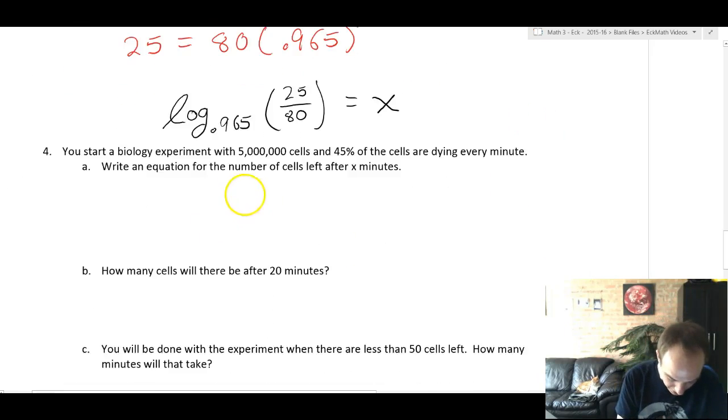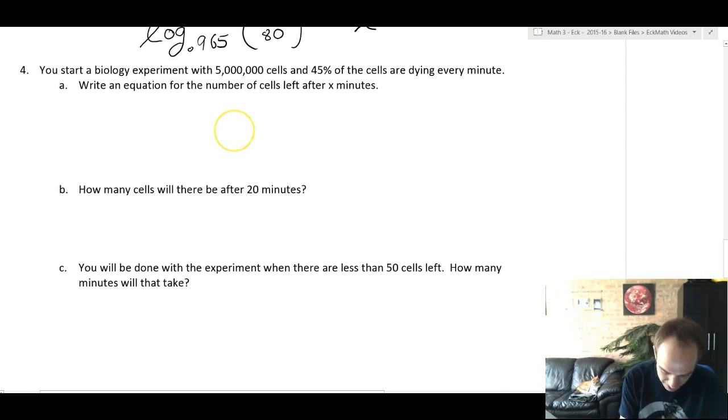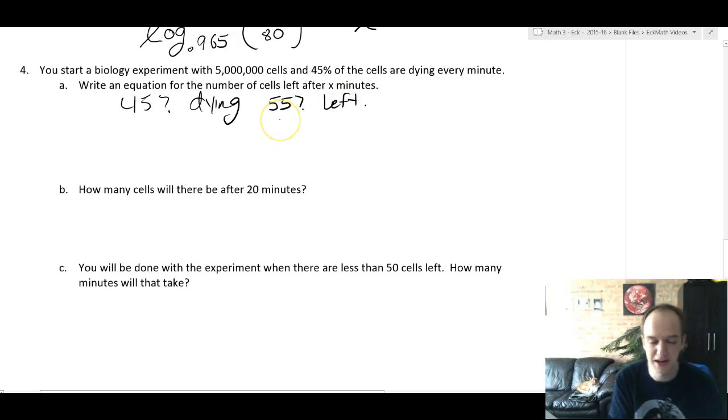Last problem. You start a biology experiment with 5 million cells and 45 percent of the cells are dying every minute. So if 45 percent are dying, that means that 55 percent have to be left. And together those percents add up to 100. So the base is going to be 0.55 to the x because it's talking about x minutes. And the initial value is 5 million.